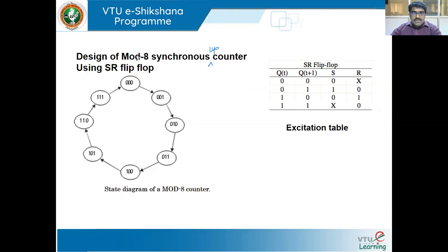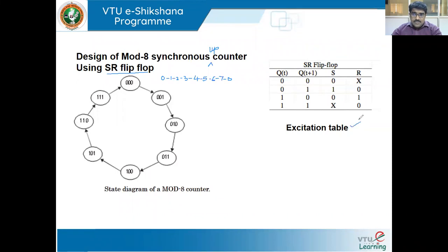Mod 8 means 0 to 7, the largest number being 7. It includes a minimum of 3 bits to represent 7, so 3 flip-flops. The up counter sequence goes 0, 1, 2, 3, 4, 5, 6, 7 and then back to 0. We are designing this mod 8 synchronous up counter using SR flip-flops. The excitation table for SR flip-flop: 0→0 is 0 don't-care, 0→1 is 1 0, 1→0 is 0 1, 1→1 is don't-care 0.